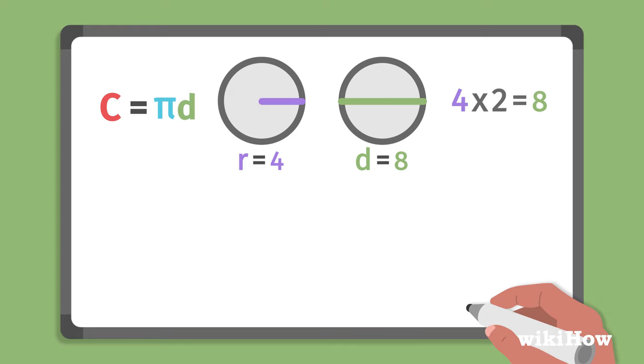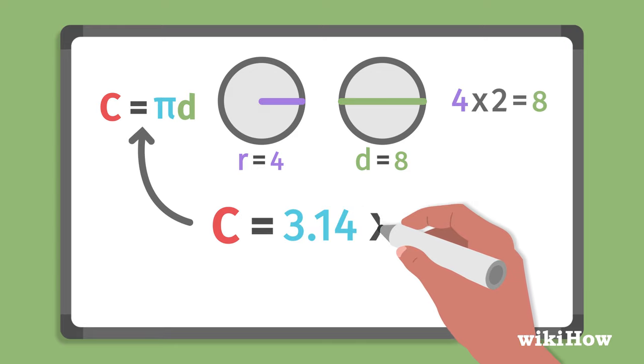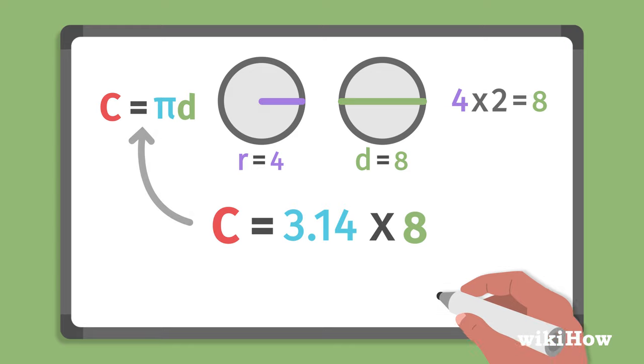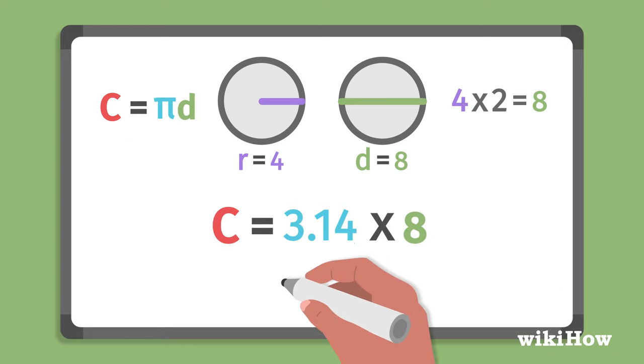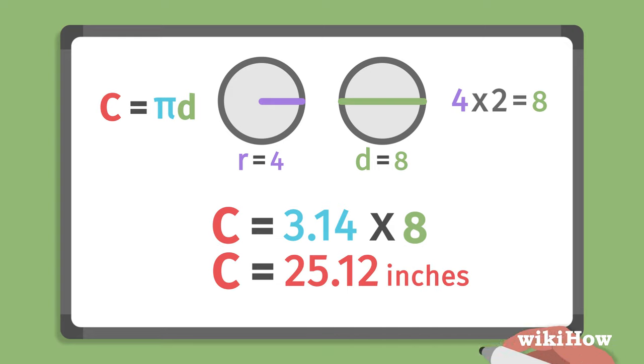Then, plug the diameter into the C equals pi times D formula. Finally, multiply pi times 8 to find that the circumference of your circle is 25.12 inches.